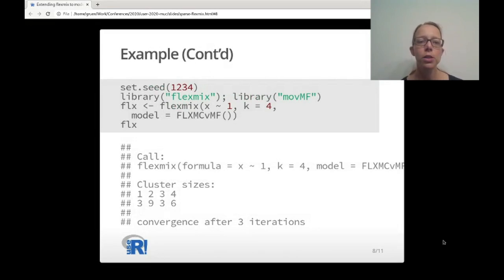To fit now mixtures of von Mises-Fisher distributions, we set a random seed for reproducibility and we load two packages: FlexMix to get access to function FlexMix, and the package movMF to get access to the model driver.